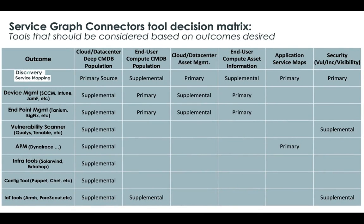Beyond coverage, consider which tools serve as primary or supplemental sources for populating the CMDB to drive specific outcomes. For example, if a customer needs a complete CMDB covering both on-premise and cloud resources, our recommendation is Discovery, purpose-built for discovering on-premise and cloud resources — not only from a CI attribute standpoint but also the relationships between them. Then leverage any relevant tools as supplemental information depending on the data needed to answer very specific outcomes.